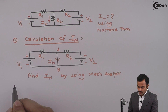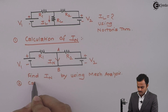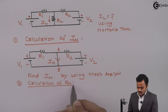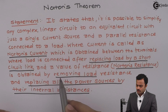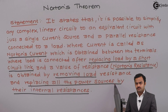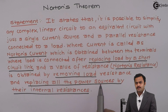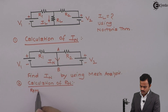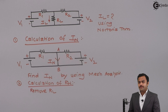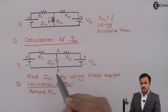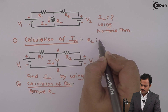Once we have IN, we move to the second step: calculation of RN, Norton's resistance. We need to remove the load by open-circuiting it, and all power sources — voltage and current sources — must be replaced by their internal resistances. While calculating IN, RL was short-circuited; for RN, RL is open-circuited.